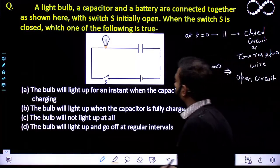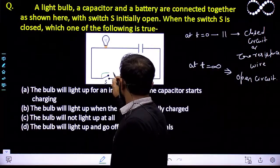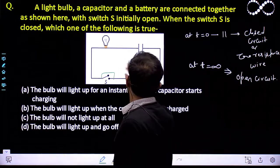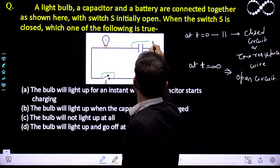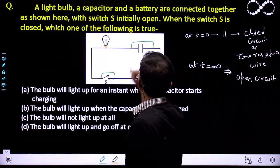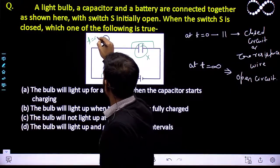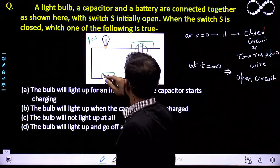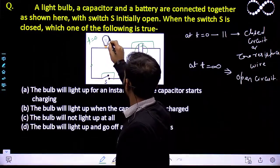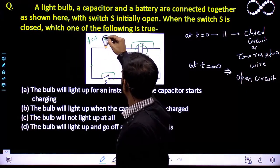So the moment the switch is closed, this capacitor will behave like a zero resistance wire. So since it is a short circuit with zero resistance, current will start flowing because this bulb will have some resistance. When the current flows, so obviously the bulb will glow.